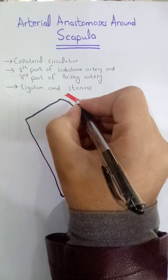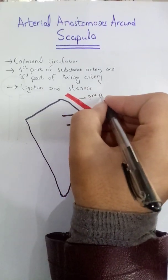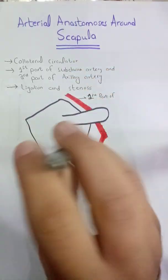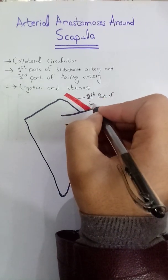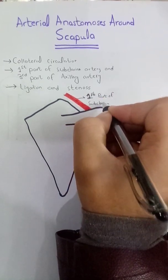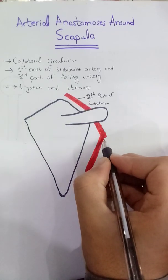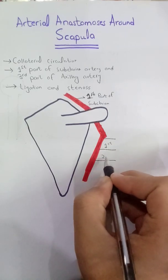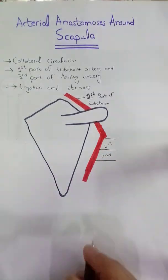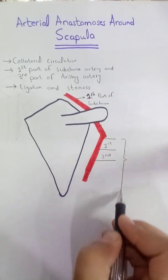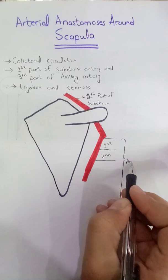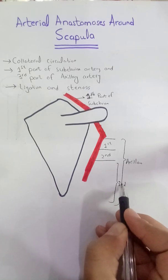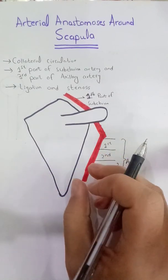Now we will label it and then see the branches. This was the first part of the subclavian artery. From this point begins the axillary artery — this will be the first part, this will be the second part, and onward will be the third part. This whole part is the axillary artery, and we are magnifying the third part because we are going to discuss it.